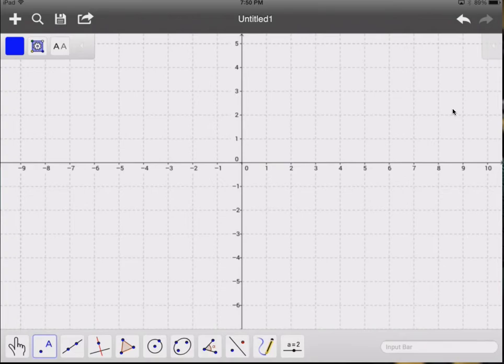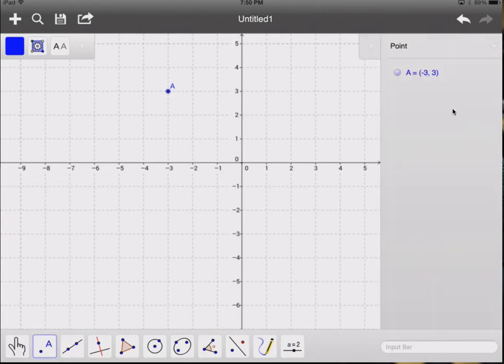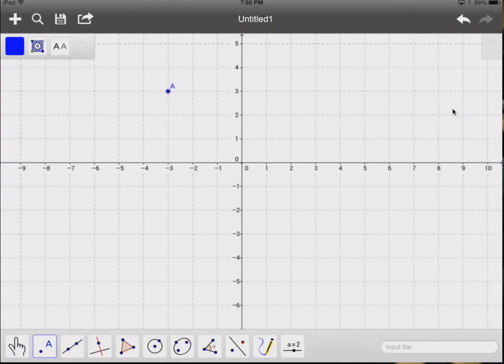So let's start with a point like negative 3, 3. If I tap negative 3, 3, I get a letter A there. And if I hit the arrow for our sidebar, you can see that it shows us the algebraic representation of that point, which is negative 3, 3. I'm going to close the sidebar again with the arrow. So let's put a few other points on the screen here.